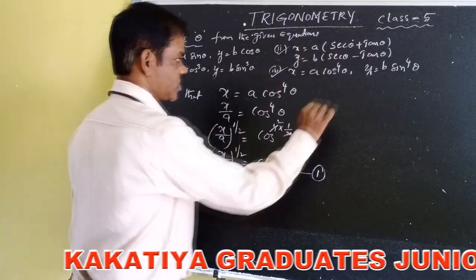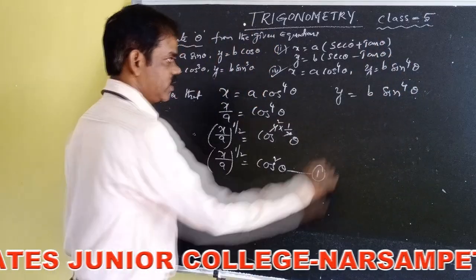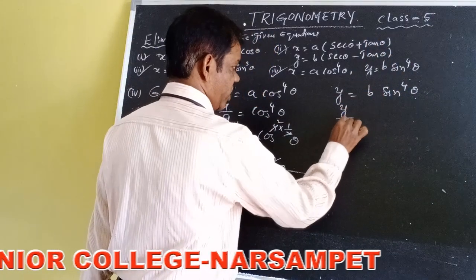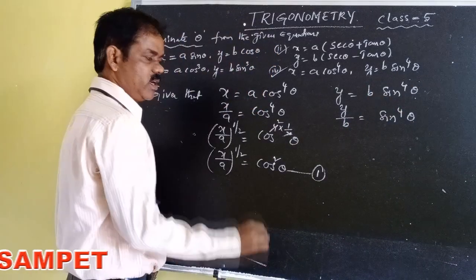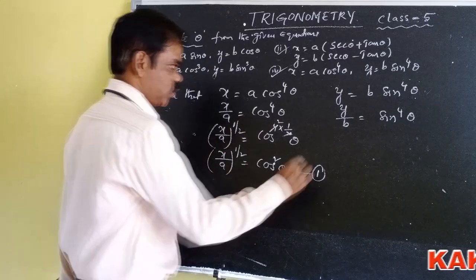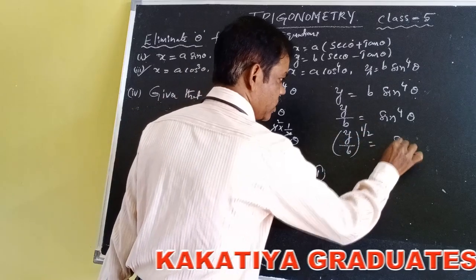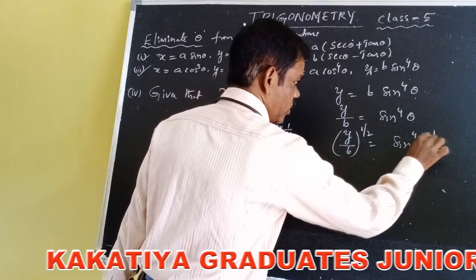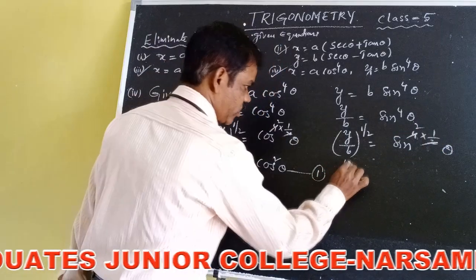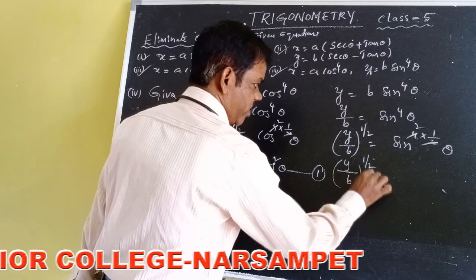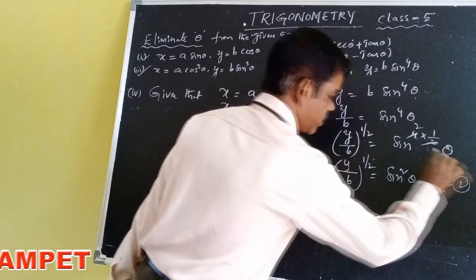The second equation is y = b·sin⁴θ. Taking b to the other side, y/b = sin⁴θ. Same concept: multiply the power by 1/2 on both sides. We get (y/b)^(1/2) = sin^(4 × 1/2)θ. Two twos cancel, so (y/b)^(1/2) = sin²θ. Let us consider this as equation number 2.